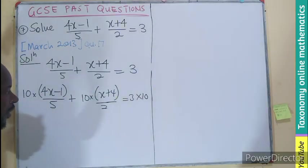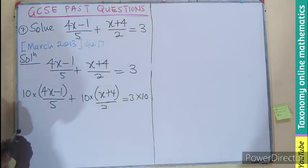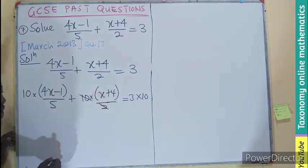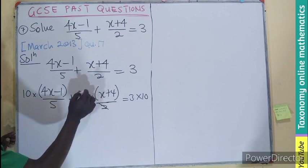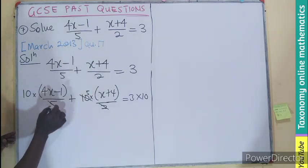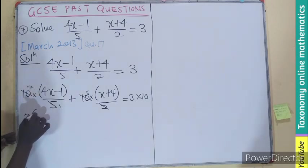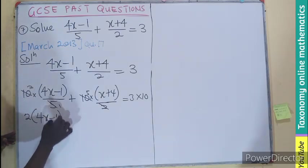The idea of multiplying by the LCM is to clear the fraction. When we simplify, 10 divided by 5 gives 2, and 10 divided by 2 gives 5.